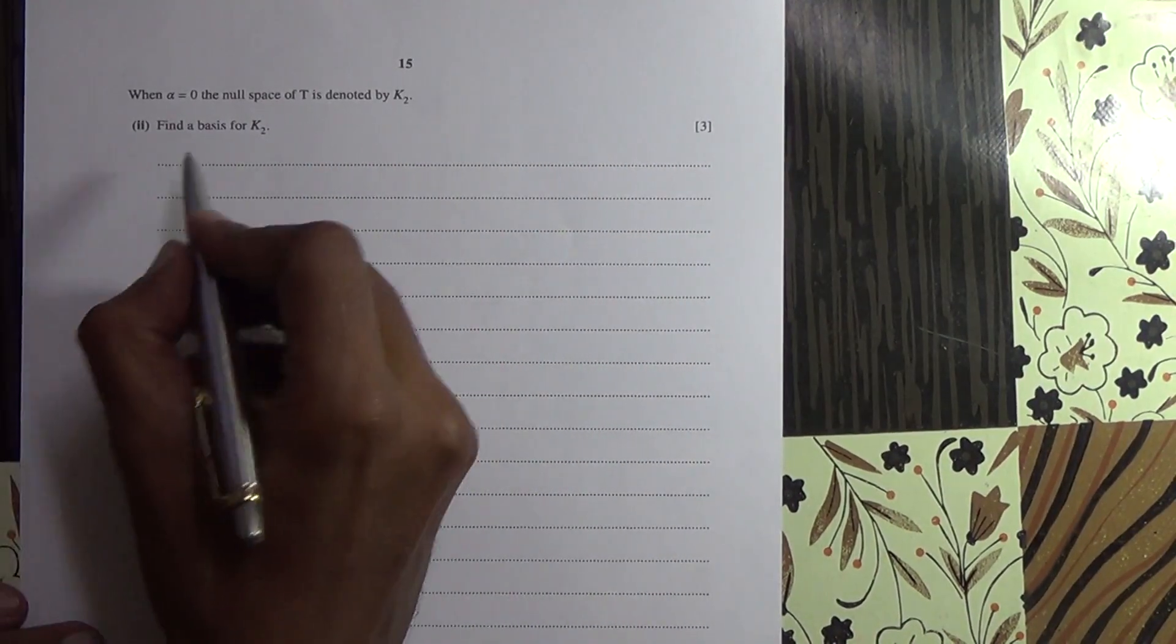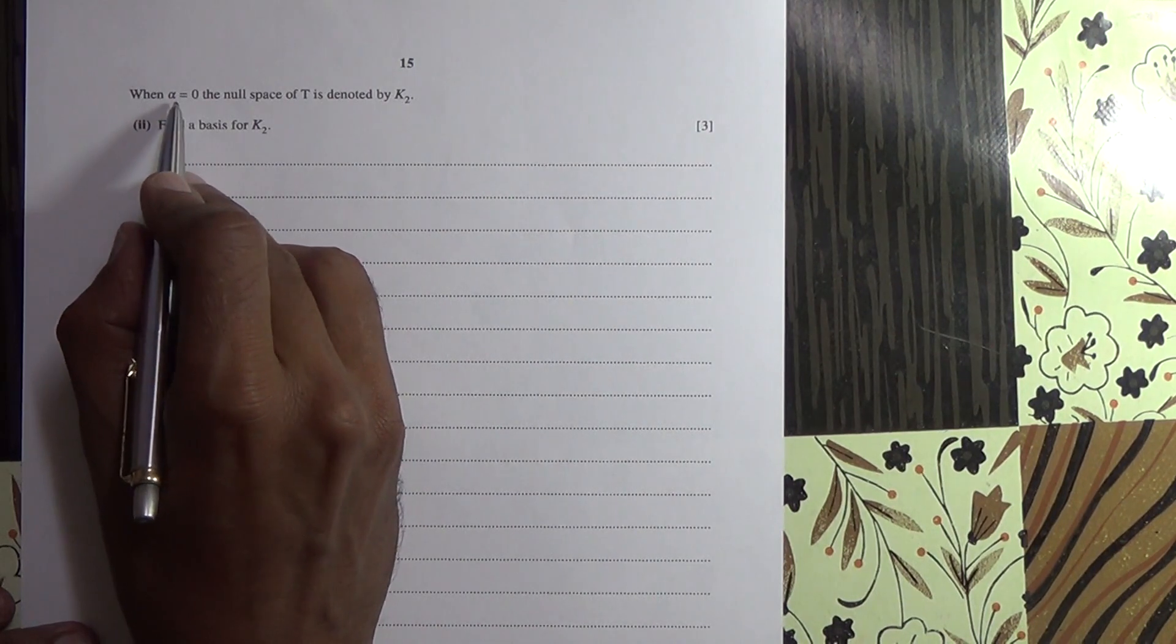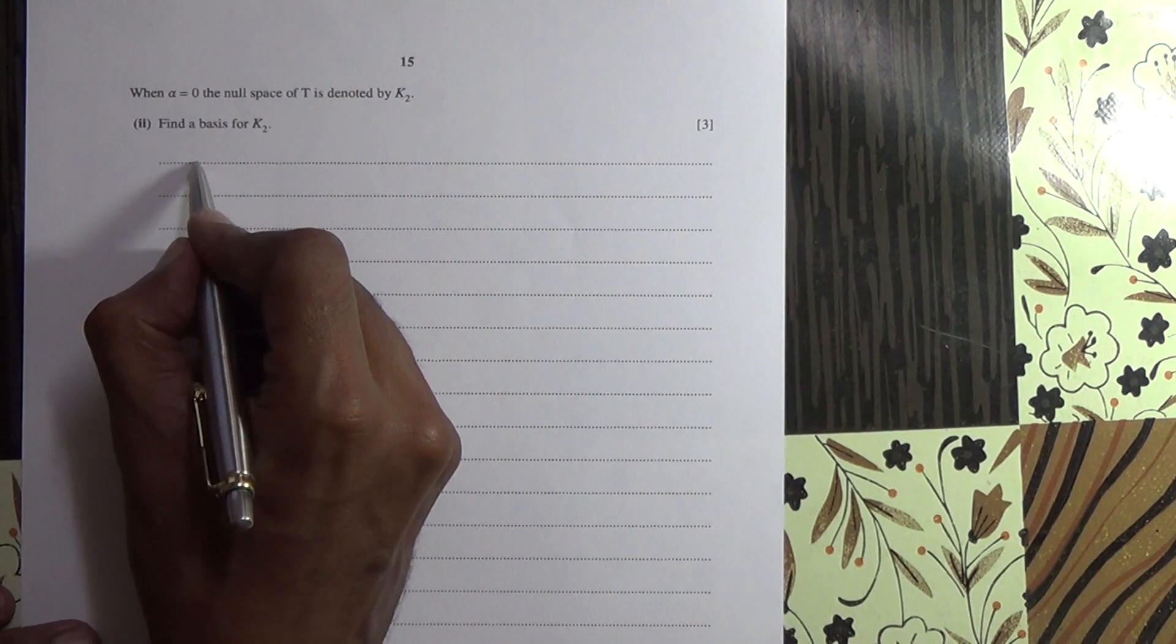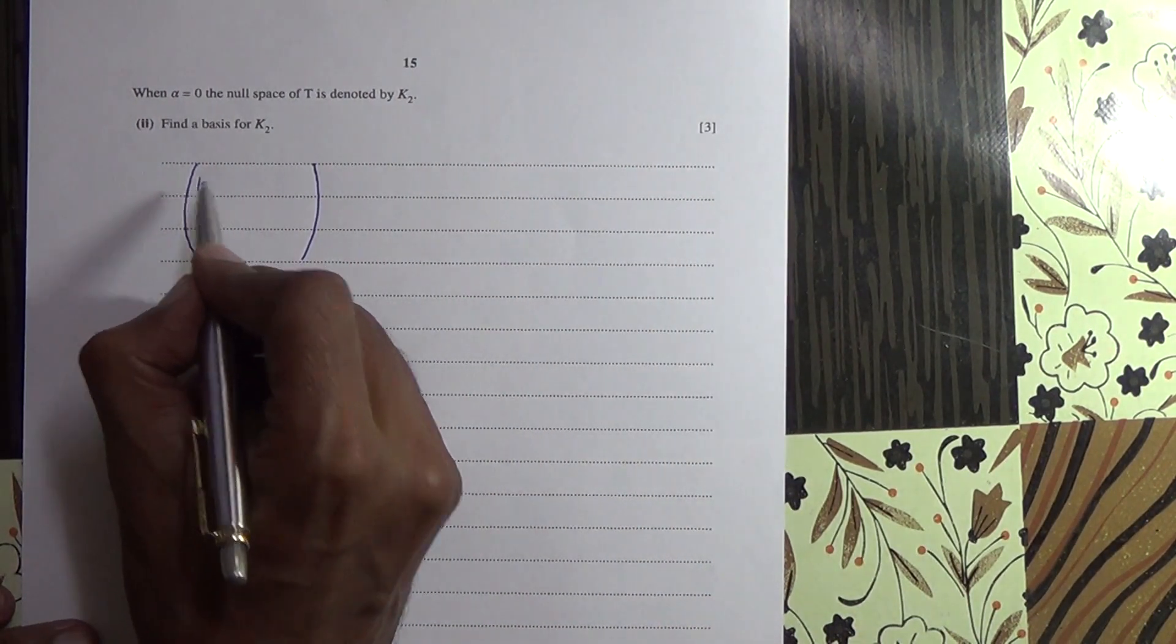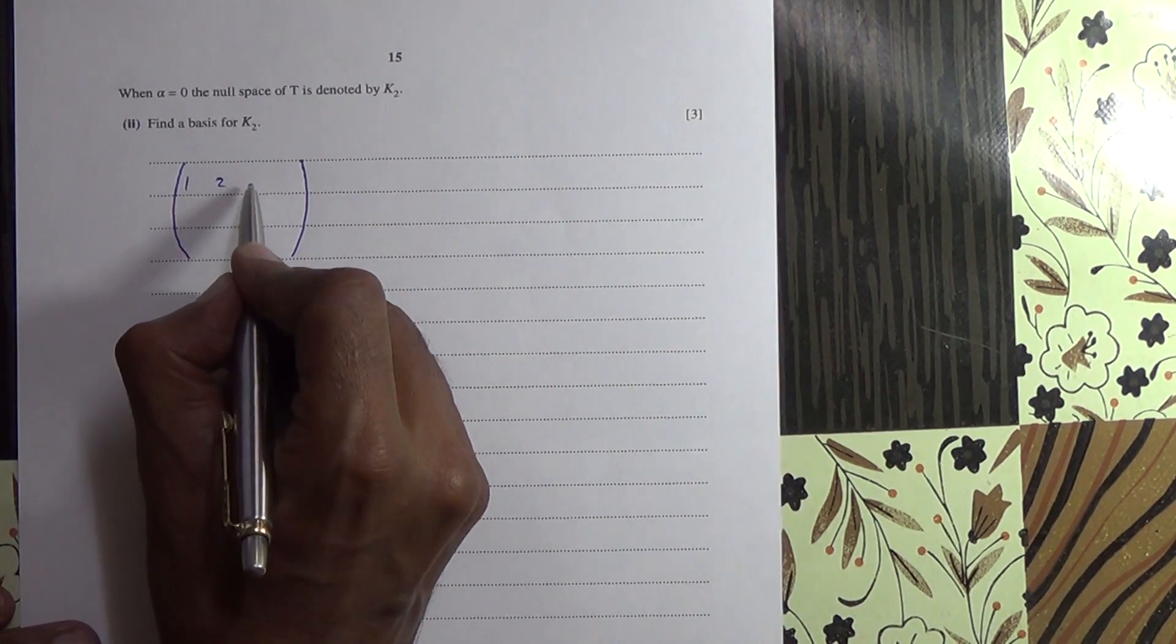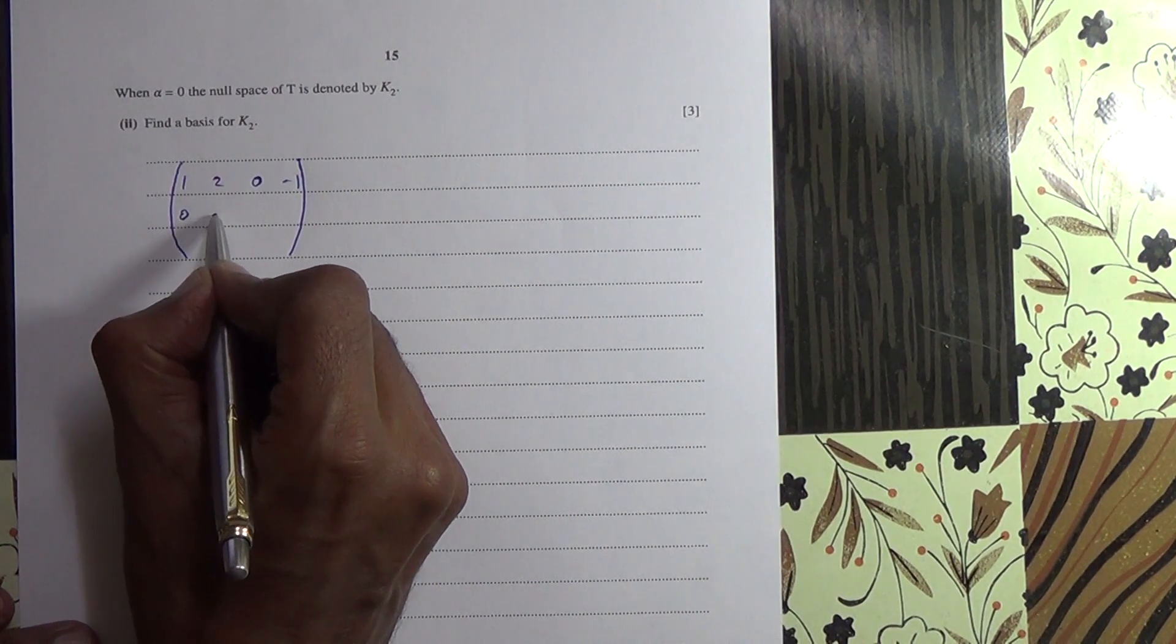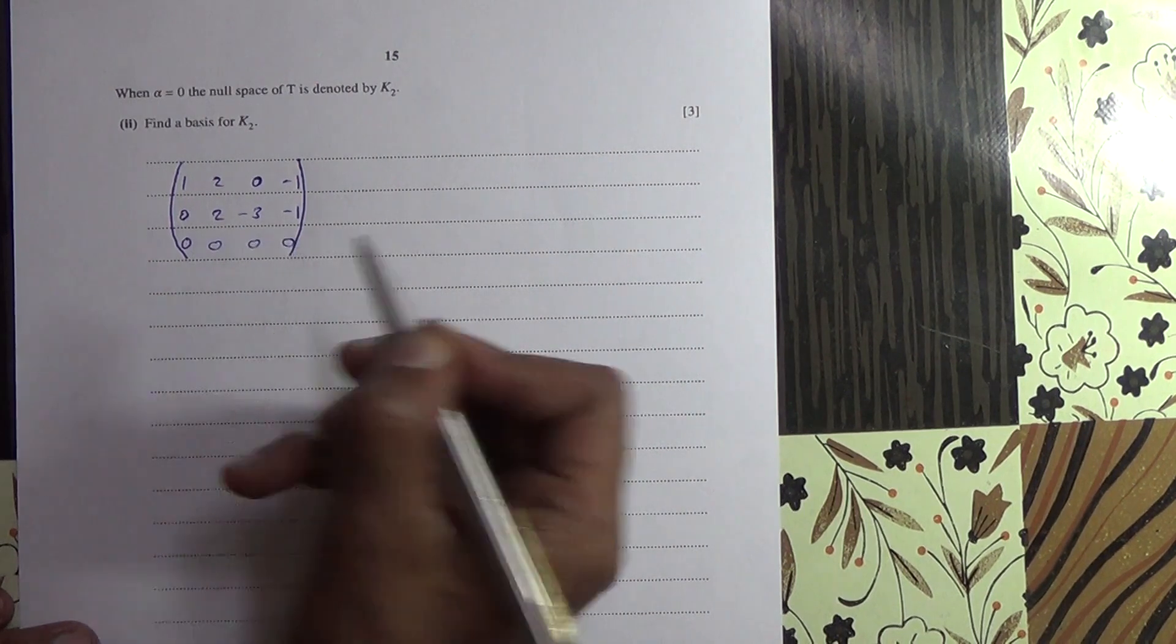For the second part of this question, we have the null space is equal to 0, I mean the alpha is equal to 0, and the null space is denoted by K2. So if we substitute alpha for 0 into the matrix that we obtained earlier on, we should be able to get 1, 2, 0, minus 1, 0, 2, minus 3, minus 1, 0, 0, 0, 0, 0.